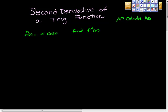AP Calculus AB, second derivative of a trigonometric function. Wow, that was awful. So, here we go.